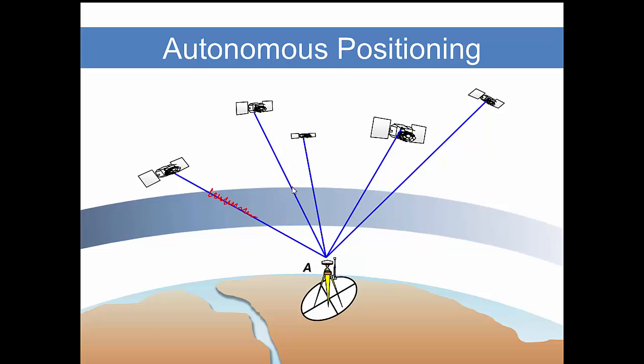So these signals as they pass through the ionosphere are degraded and delayed, and therefore the error in your position is subject to the induced errors by the ionosphere. The ionospheric error is the largest source of positioning error in GNSS positioning.